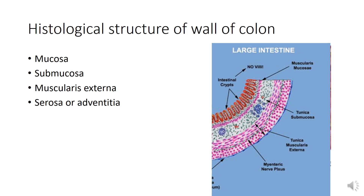In the mucosa you can observe that there are no villi and no plica circularis. Mucosa consists of three layers: epithelium, lamina propria, and muscularis mucosa. The mucosa of the large intestine is devoid of villi and plica circularis.